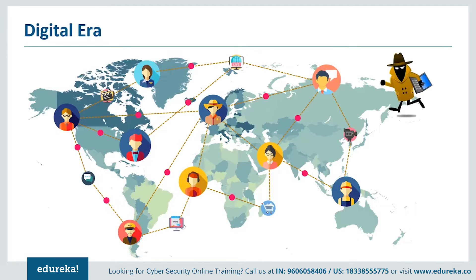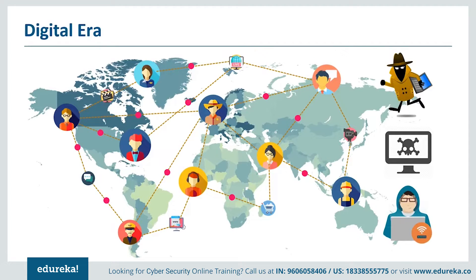Cyber criminals are in the business of stealing sensitive data like contact numbers, credit card information, and bank account details that they sell to third parties for profit. There are also malicious hackers with personal enmity who hack into systems to expose vulnerabilities. Hacktivists, inspired by political and social activism, hack systems opposed to their ideology. Making use of these vulnerabilities present in the internet's architecture, people are trying to initiate attacks in the cyber space — we call them cyber attacks.